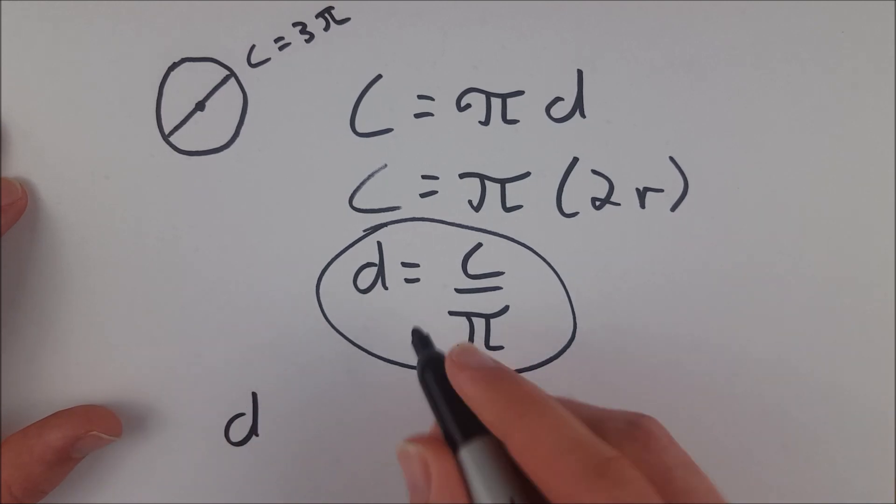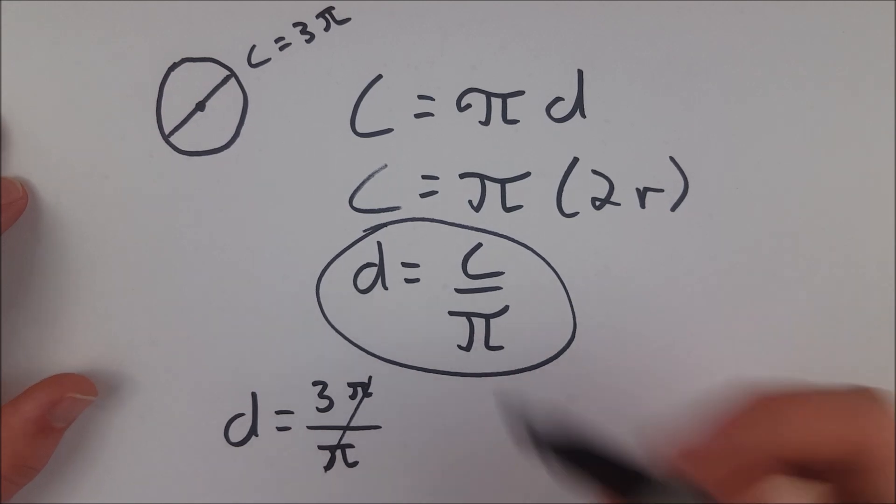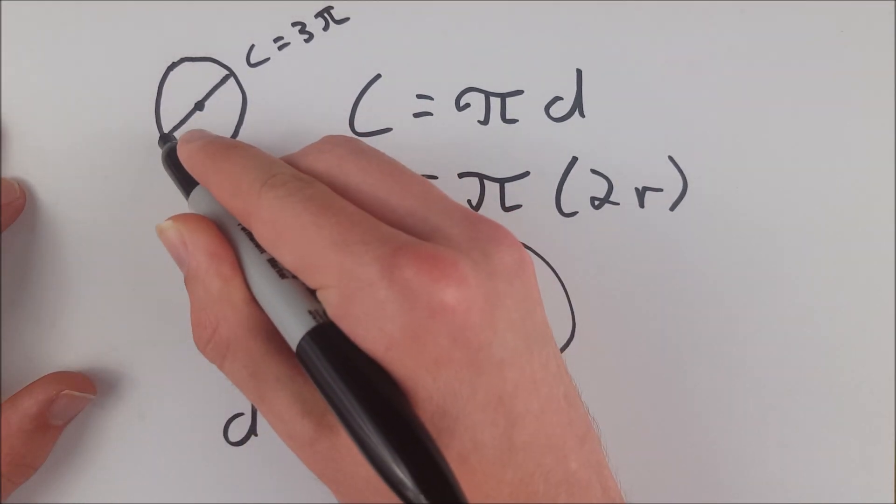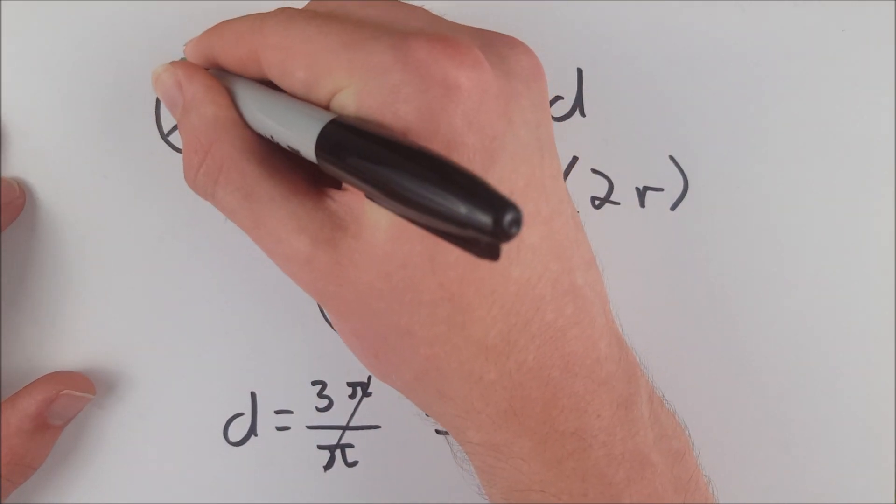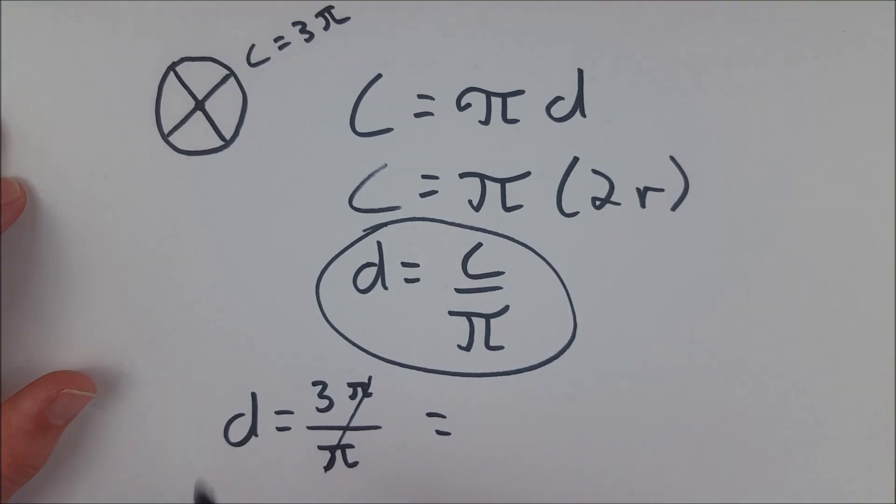So that means that the diameter using this formula is equal to 3π divided by π. You can see where this is going. This is pretty easy. The π's cancel out. π divided by π is 1, so we are left with the diameter of the circle, the length from here to here, or from here to here. You understand what diameter is. So diameter, in this case, equals 3.